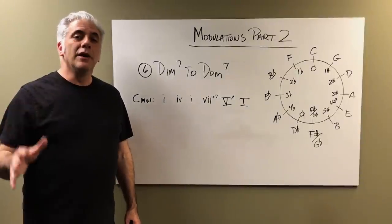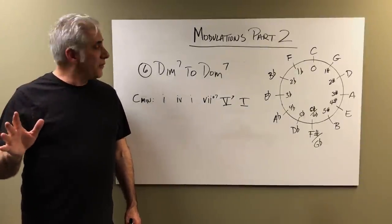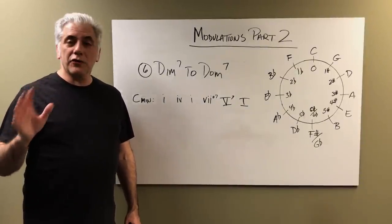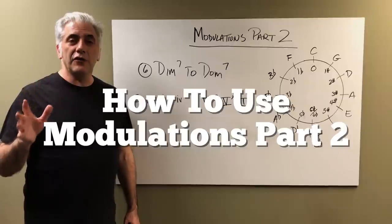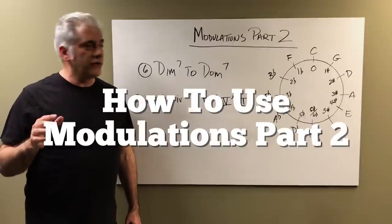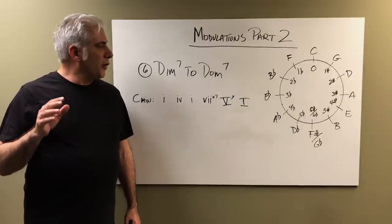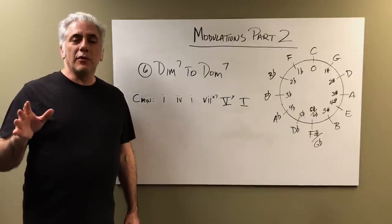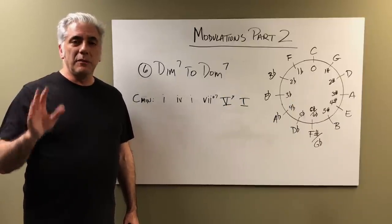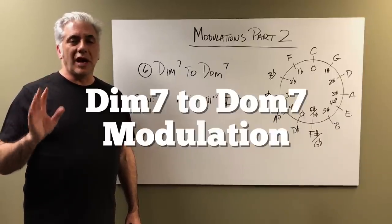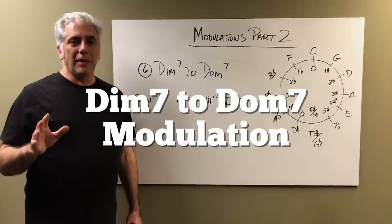Hi everybody, I'm Rick Beato. Today's Everything Music is going to be part two of how to use modulations. We're going to pick it up at number six, which is a diminished seventh to dominant seventh modulation.